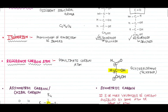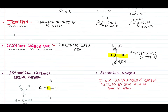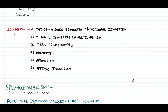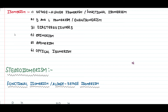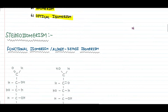Now that we have covered the basic terms, we shall proceed to the concept of isomerism as exhibited by monosaccharides or carbohydrates in general. Carbohydrates exhibit six different types of isomerism: first, ketose-aldose isomerism (also known as functional isomerism); second, D and L isomerism or enantiomerism; third, diastereoisomerism; fourth, epimerism; fifth, anomerism; and sixth, optical isomerism.